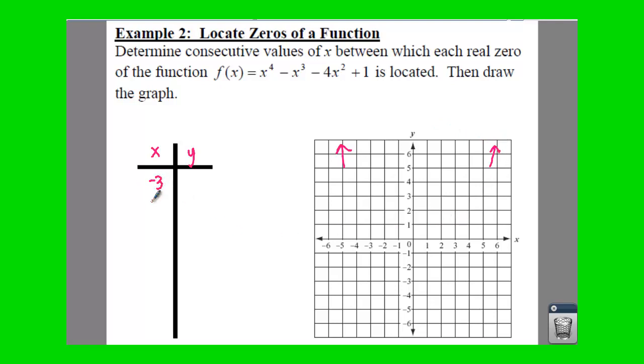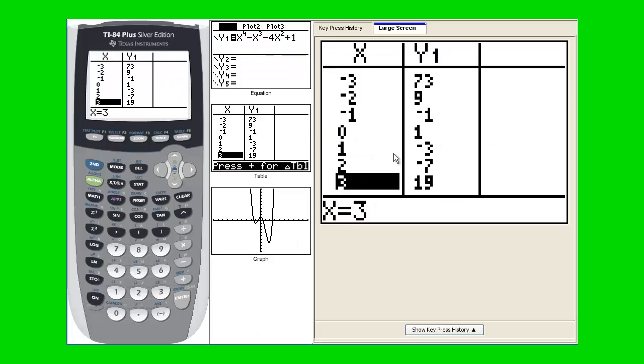So let's type in our numbers. So we have negative three, negative two, negative one, zero, one, two, and three. And going back to our table, we're going to type in these as our y values.